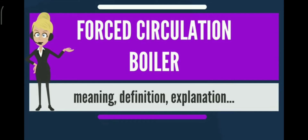What makes the forced circulation boiler different is its use of a secondary pump that circulates water through the boiler. The secondary pump takes the feed water going to the boiler and raises the pressure of the water going in. In a natural circulation boiler, the circulation of water is dependent on the differential pressures caused by the change of density in the water as it is heated. In contrast, the forced circulation boiler uses a water circulation pump to force that flow instead of waiting for the differential to form.